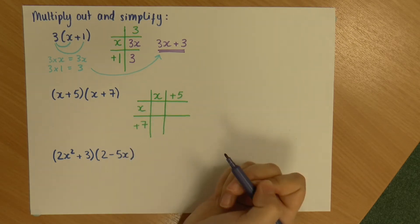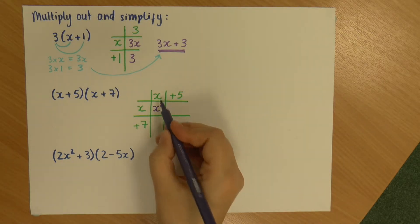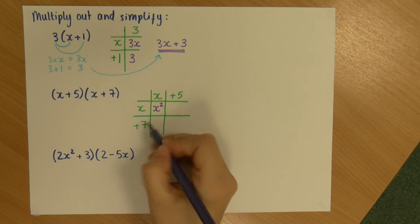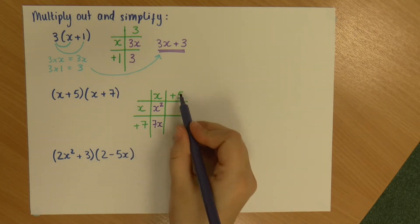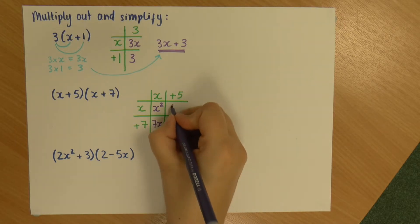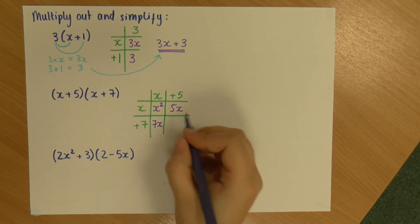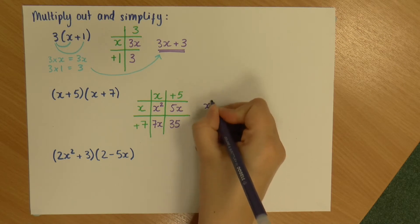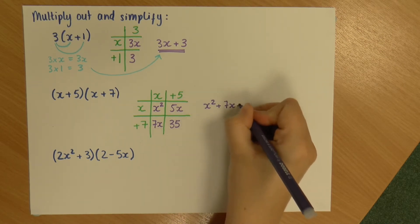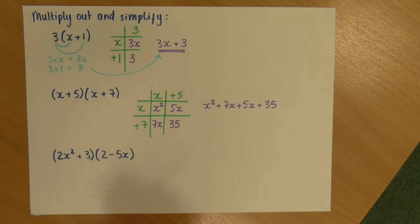Okay. And so, the box works exactly the same way as it did in the first question. Each of these cells is the multiplication of what's above and what's next to it. So, here I've got x times x. Now, x times x is x squared. In the one underneath it, I've got x times 7, which is 7x. Top right box, 5 times x, which is 5x. And my bottom right box, 5 times 7, which is 35. And then I just write them all out like this.